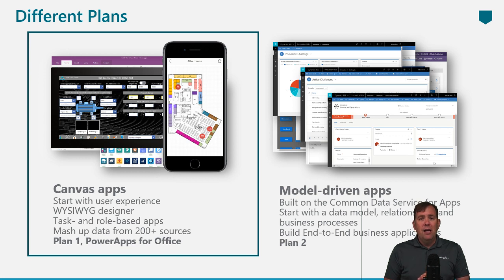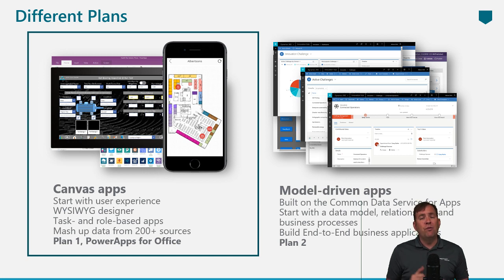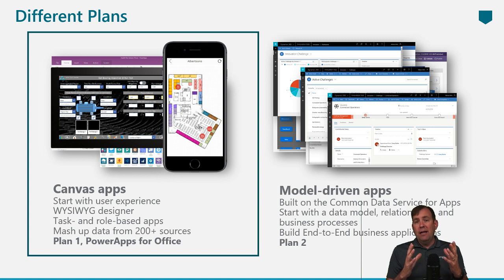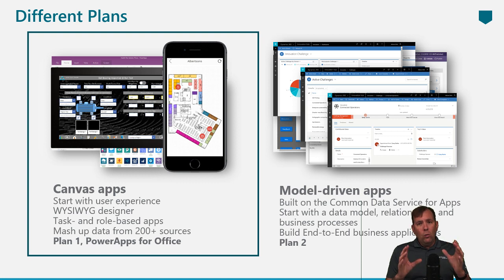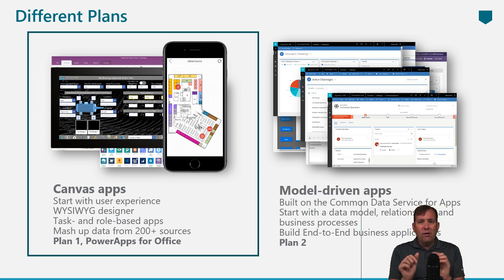Here are the licensing differences. Model-driven applications require a P2 license, which typically comes with Dynamics 365 — so if you have Dynamics, chances are you already have it. The P1 plan is for Canvas applications and gives you access to premium connectors, including Common Data Services. There's also a Power Apps for Office license, which only supports Canvas applications but cannot connect to premium connectors. If you have an Office 365 subscription, you likely already have the Power Apps for Office license.